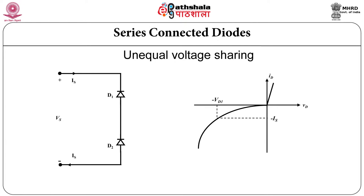Let us see the series connection of diodes. Series connection is required generally in case of high voltage applications in which diodes are not generally available for higher breakdown voltage ratings, so we require to connect diodes in series. If we connect diodes in such a manner, it is expected that the voltage drop across the two diodes is the same in reverse bias condition. But practically it will never happen.